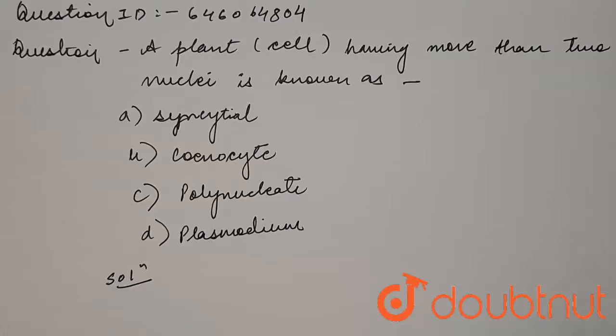A plant cell having more than two nuclei is known as: a) syncytial, b) coenocyte, c) polynucleate, and d) plasmodium.